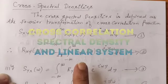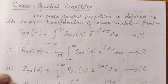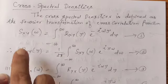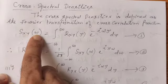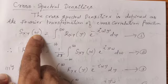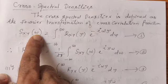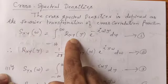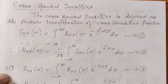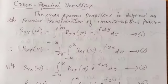Today, we will discuss cross spectral density. The cross spectral density is denoted by Sxy of omega, which is the Fourier transformation of the cross correlation function Rxy of tau.